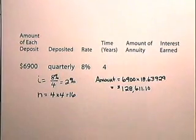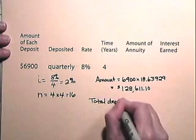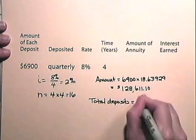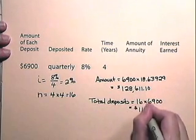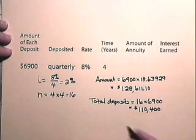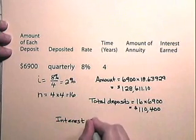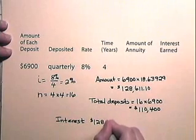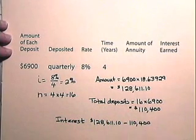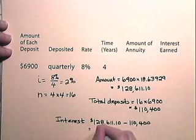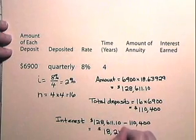In order to find the interest earned, we will look at the total deposits. The total deposits is 16 at $6,900 each, which is $110,400. So the interest will be the difference of $128,611.10 subtract $110,400. So the interest earned here is $18,211.10.